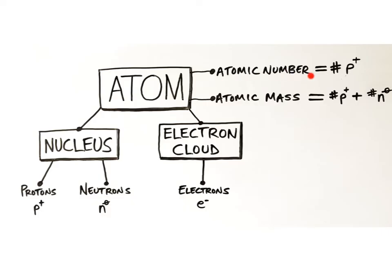The atomic number is the number of protons in the nucleus of an atom. Each element has a different atomic number because each has a different number of protons. Think of each atom's atomic number as its signature. Just like your handwritten signature is unique and identifies you, the atomic number of an atom identifies the element.